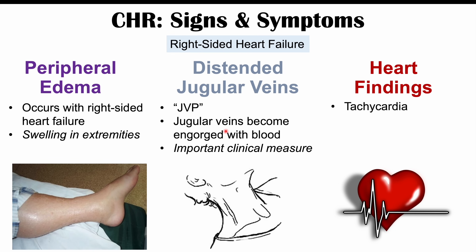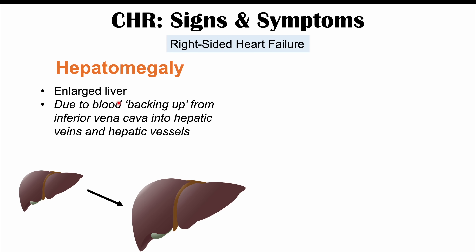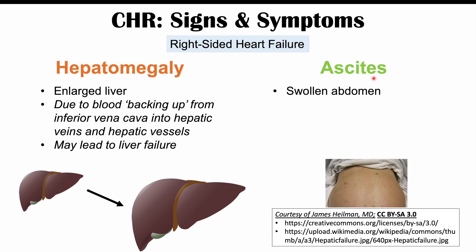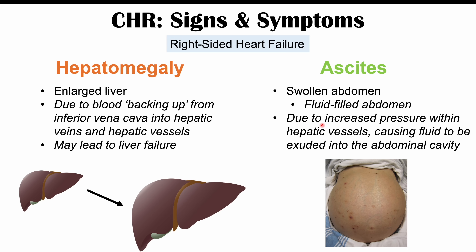Heart findings in right-sided heart failure include tachycardia — an increased heart rate — and an S3 gallop. Hepatomegaly (an enlarged liver) can also occur, caused by backup of blood into the inferior vena cava and hepatic veins. If prolonged, this can lead to liver damage and ultimately liver failure. Ascites — a fluid-filled, swollen abdomen — can also be seen, caused by increased pressure within hepatic vessels forcing peritoneal fluid into the abdominal cavity. Ascites can also occur secondary to liver failure.